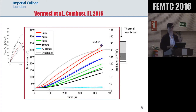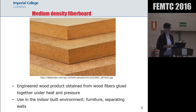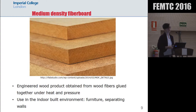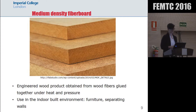So we went on to work with MDF. MDF is a material that is actually widely used in the built environment. So if PMMA is more of a theoretical material, MDF is an engineered wood product that has been obtained by wood fibers that were glued together, and then after applying pressure and heat, you get this panel. It's used for furniture — you can build cabinets out of it, and you can also use it for separating walls.